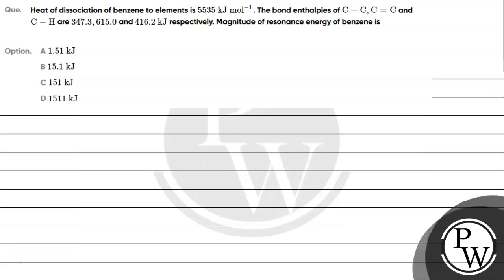Hello, let's read this question. The question says heat of dissociation of benzene to elements is 5535 kilojoule per mole. The bond enthalpies of carbon single bond carbon, carbon double bond carbon, and carbon single bond hydrogen are 347.3, 615, and 416.2 kilojoule per mole respectively. The magnitude of resonance energy of benzene is: option A 1.51 kJ, option B 15.1 kJ, option C 151 kJ, option D 1511 kJ.